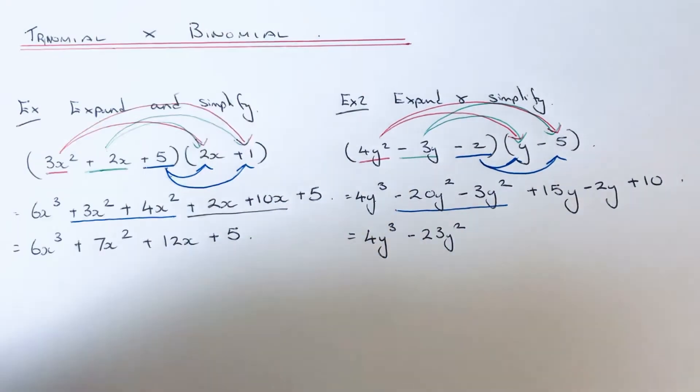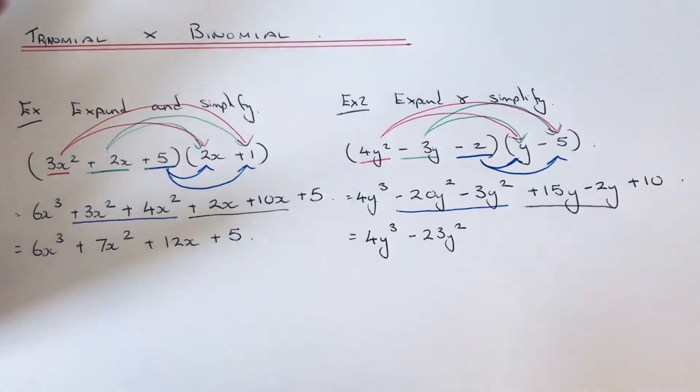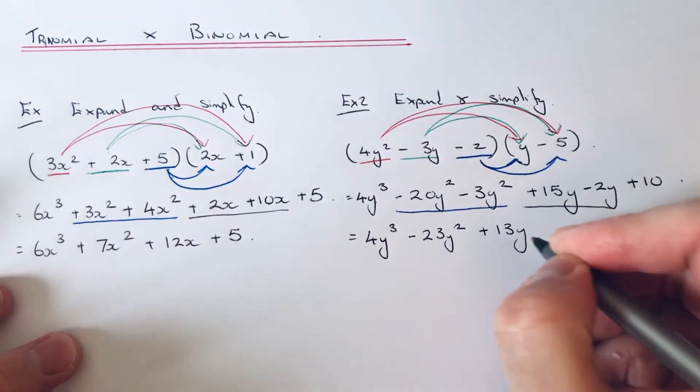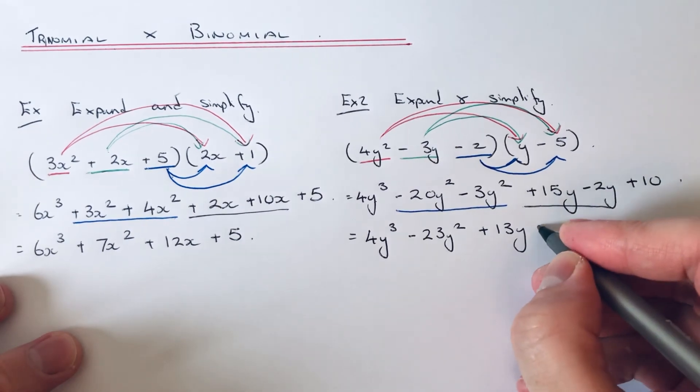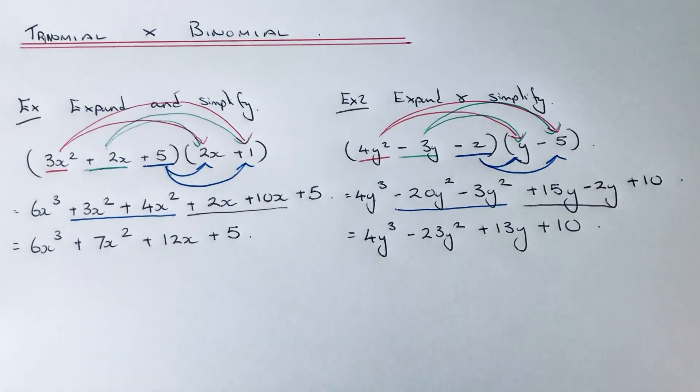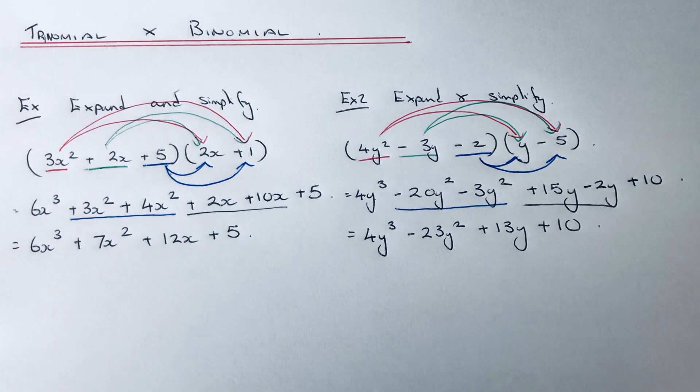And the y terms also simplify, so that will give me 13y. And we've got no numbers to simplify, so just copy that down to the final line and that is your final answer. So I hope you liked this video. If you did, like and subscribe. Thanks for watching guys, bye bye.